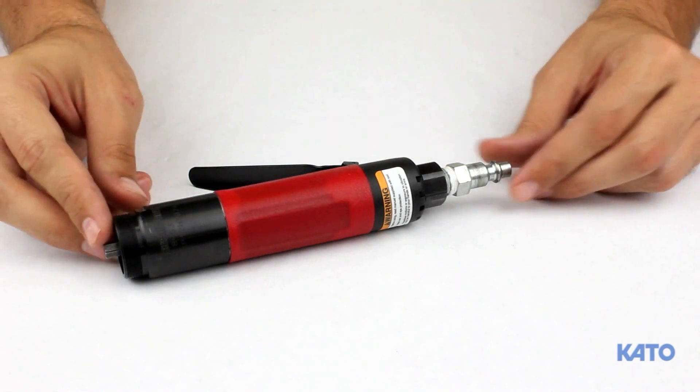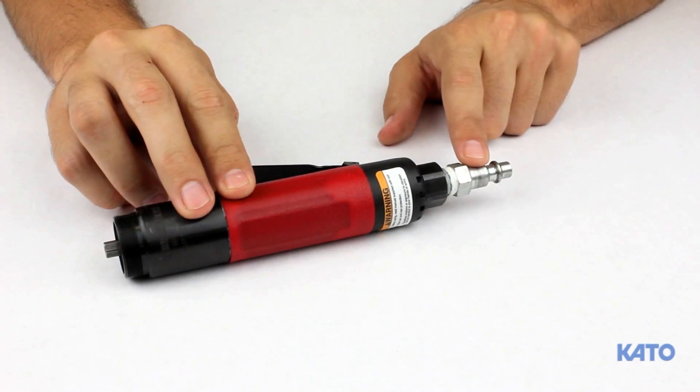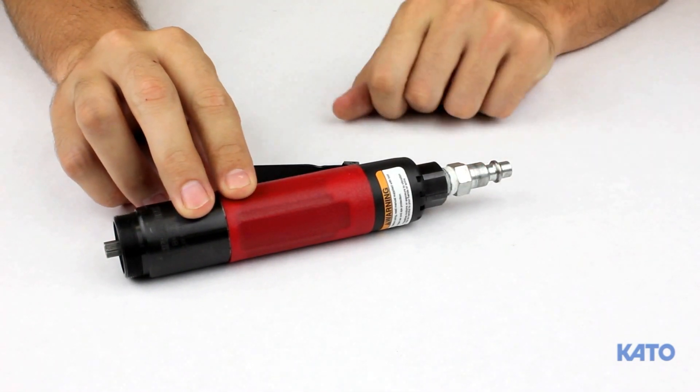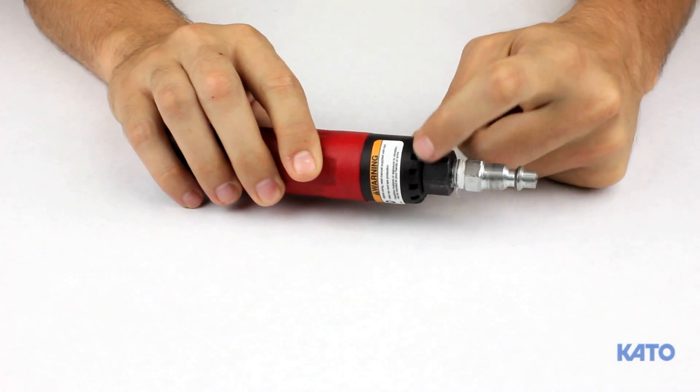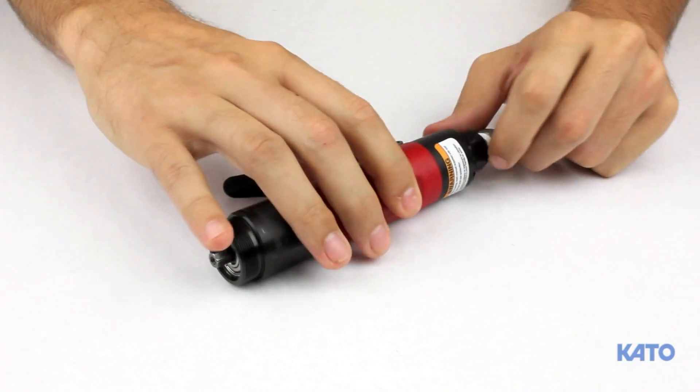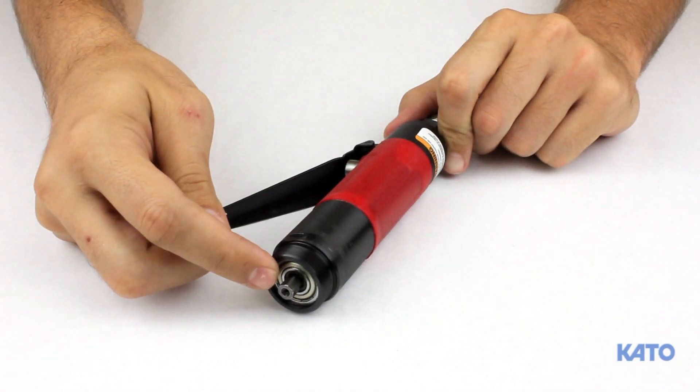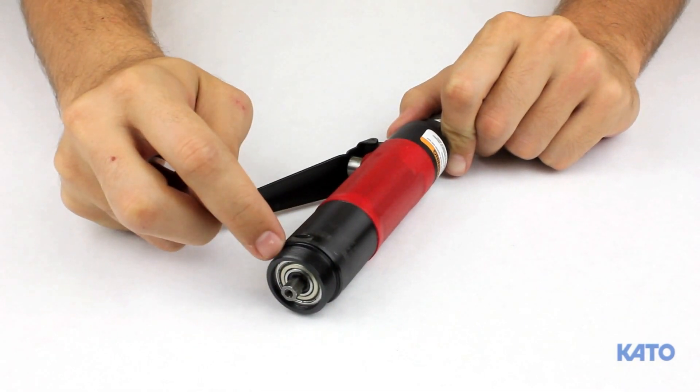This is the air motor. We've added a quick disconnect, not included, for ease of operation. Just below that are slots that allow excess air to escape. At the front is the drive shaft, and around the perimeter, external left-handed threads.